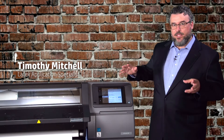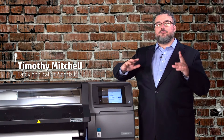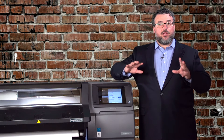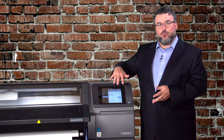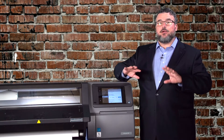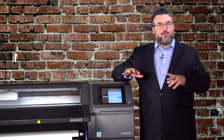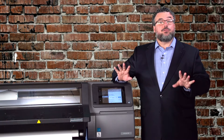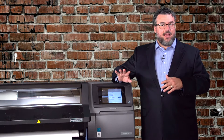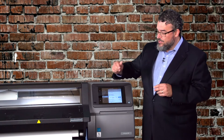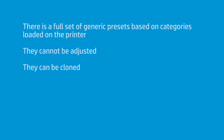The printer — all the latex printers — come with a full set of generic presets built right into the firmware. These are immutable. You can use them; they're based on categories, like what I have here is a PVC banner. But you cannot adjust them. We did that intentionally — we want to keep those permanent so you can't goof those up. You're locked out of them, in a sense.